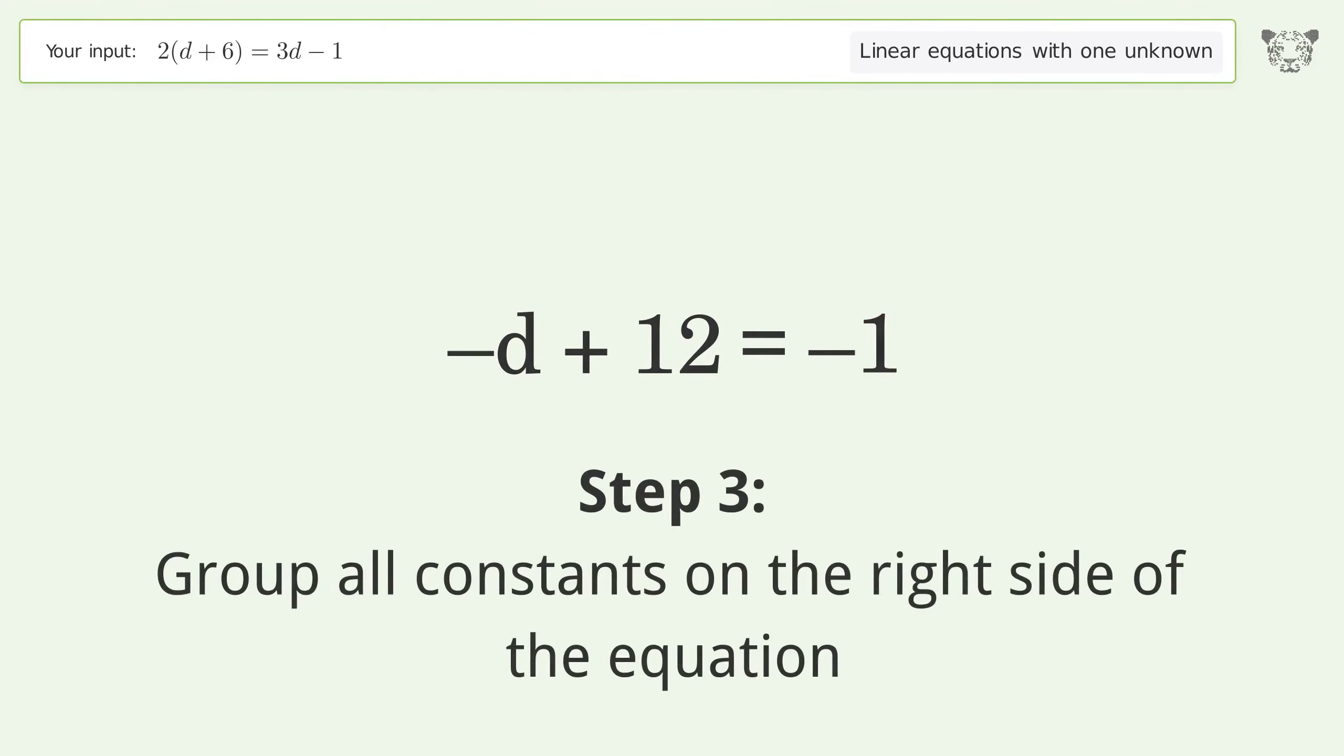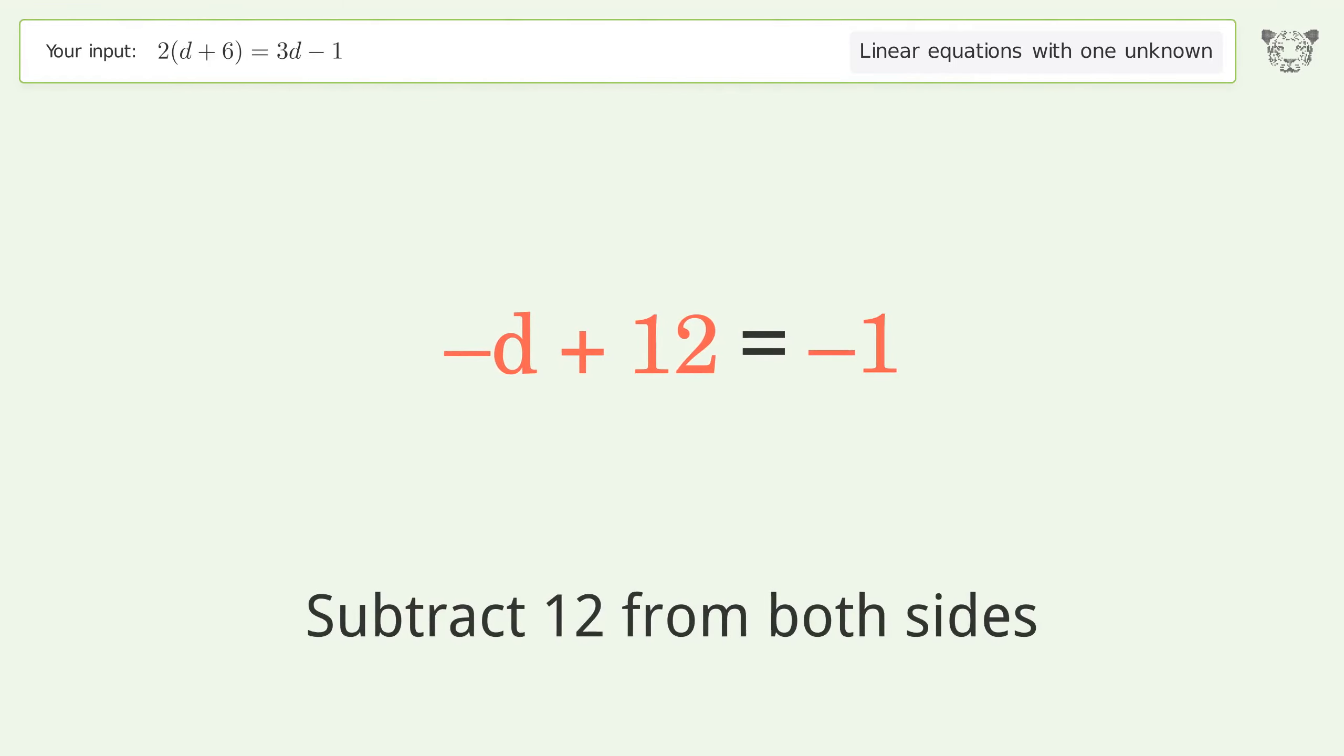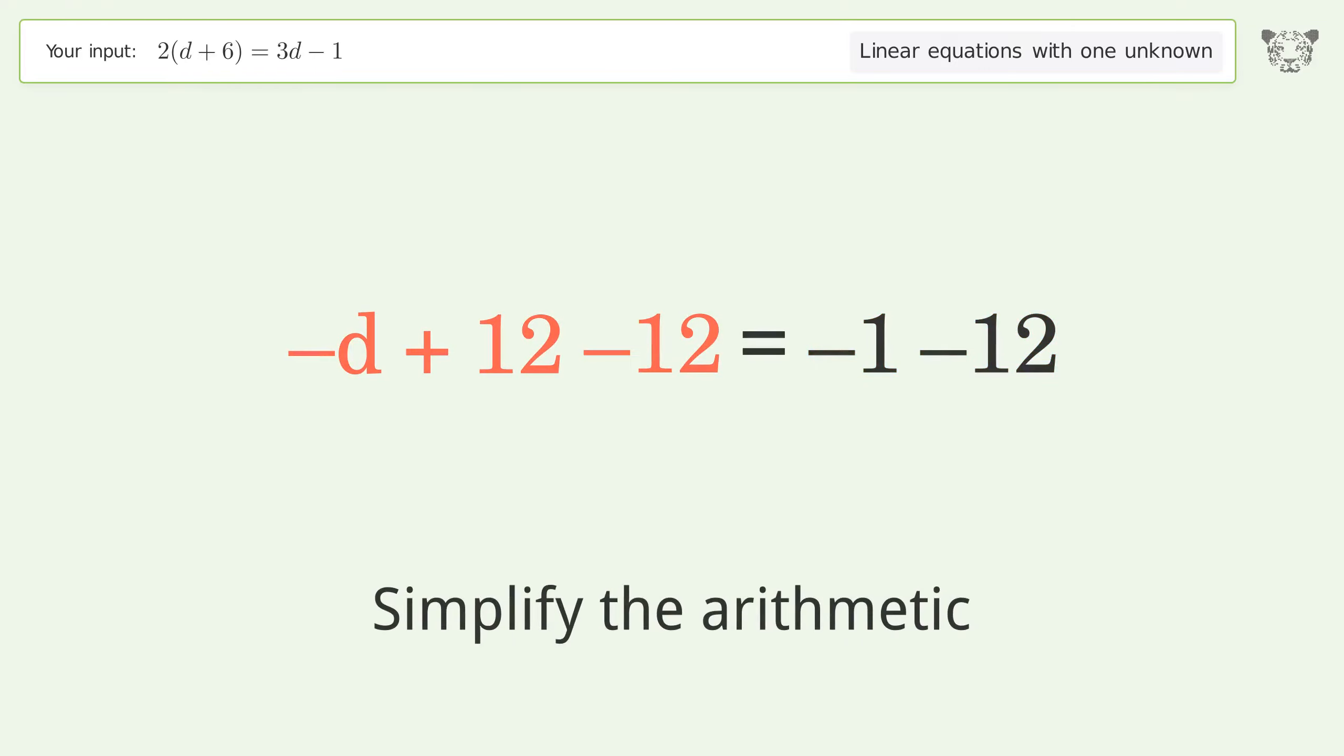Group all constants on the right side of the equation. Subtract 12 from both sides. Simplify the arithmetic.